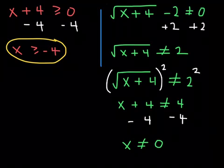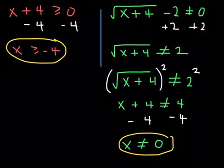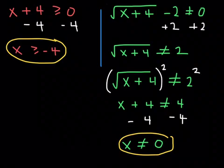Let me highlight these restrictions on your x variable. The very first one that we found is x has to be greater than or equal to negative 4. And the second restriction is x cannot be 0. Those two combined, x can only be greater than or equal to negative 4, and it must not be 0.